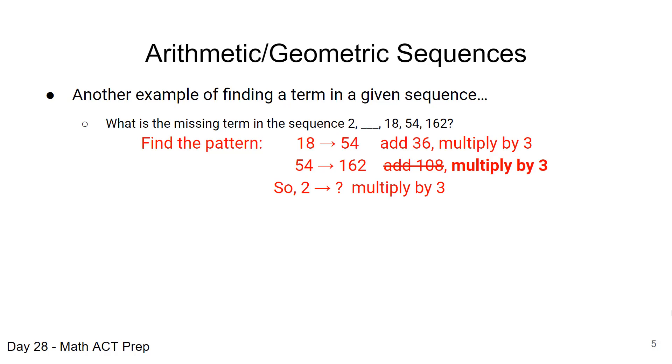So to go from 2 to the missing spot we'd multiply 2 by 3 and 2 times 3 is 6. We could also check to make sure that that term that's given, the 18, is correct by saying 6 times 3 is 18 and that is correct. So that gives us that missing term of 6.